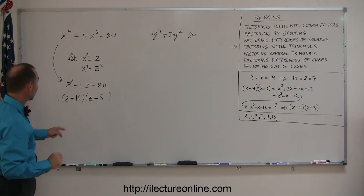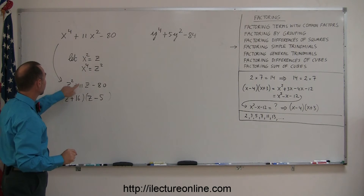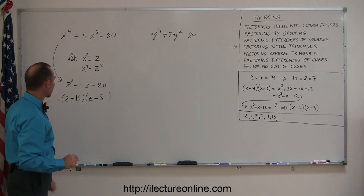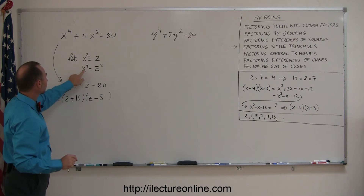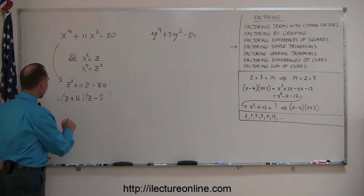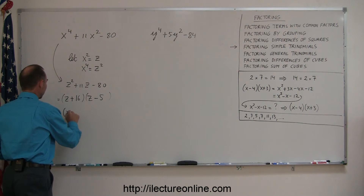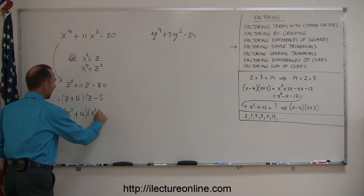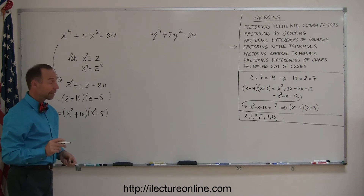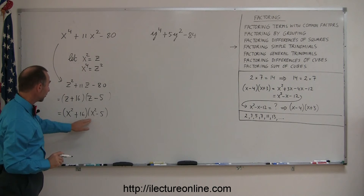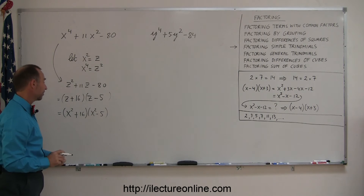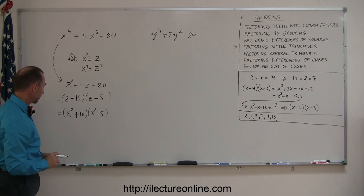But we're not done yet, because we had a substitution and used substituted variables. Now we want to plug back in the original variables. Since z was equal to x squared, we'll substitute back in for z, so we have x squared plus 16, and instead of z we write x squared minus 5. Now we look again and make sure we cannot factor anything further, like maybe the difference of squares, but since 5 is not the square of anything, that's as far as we can go. That's the answer for this particular problem.